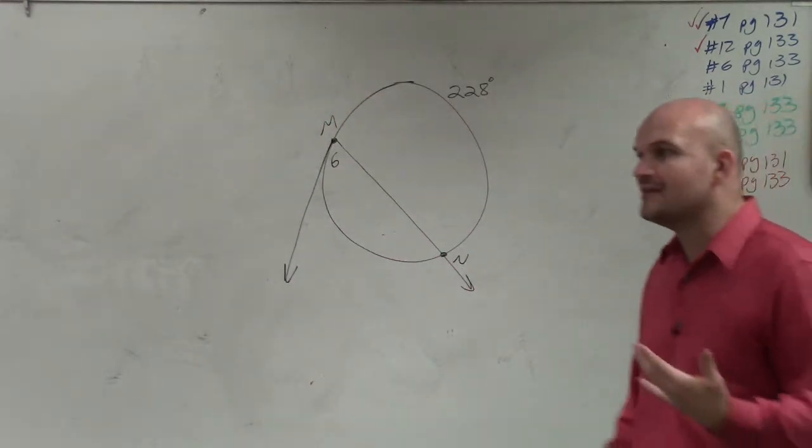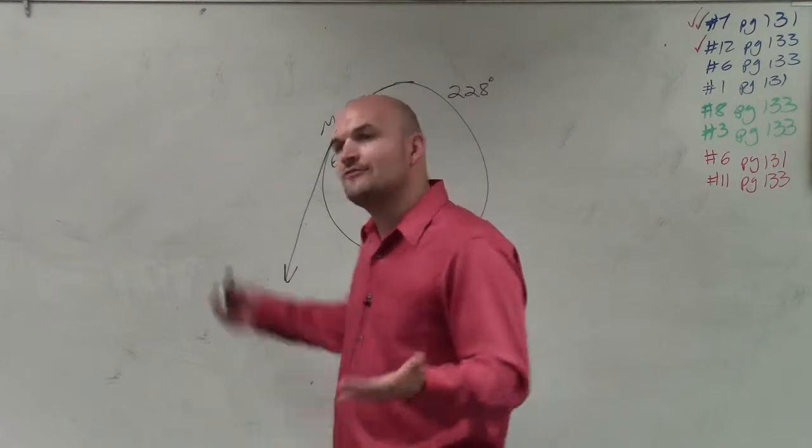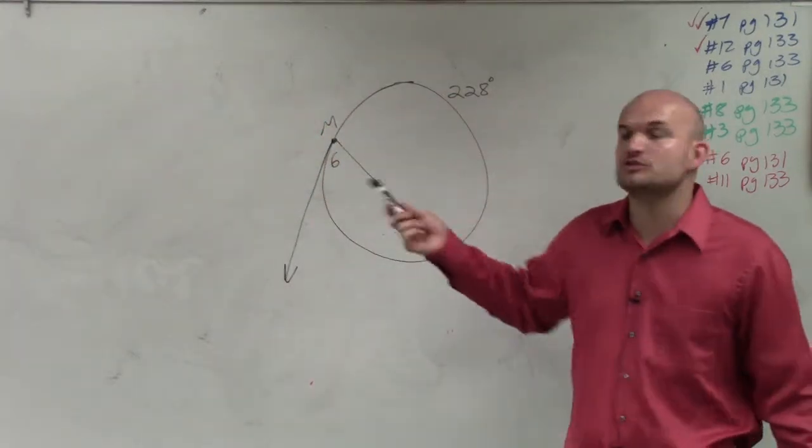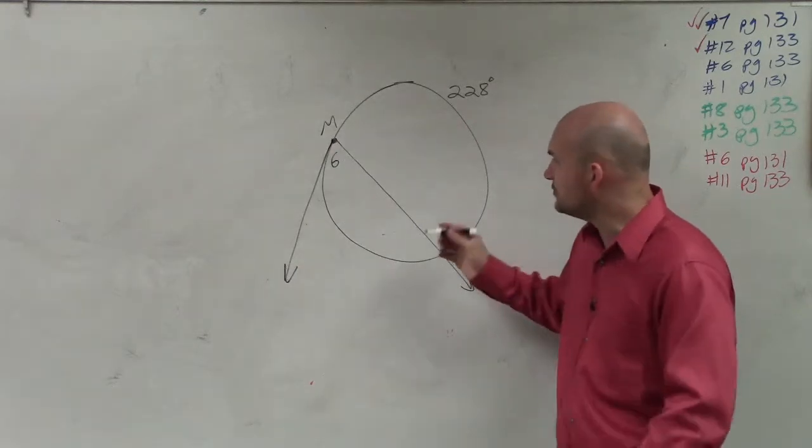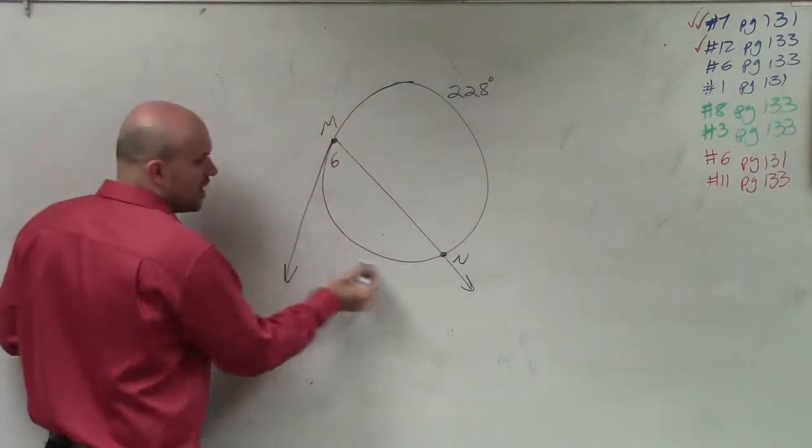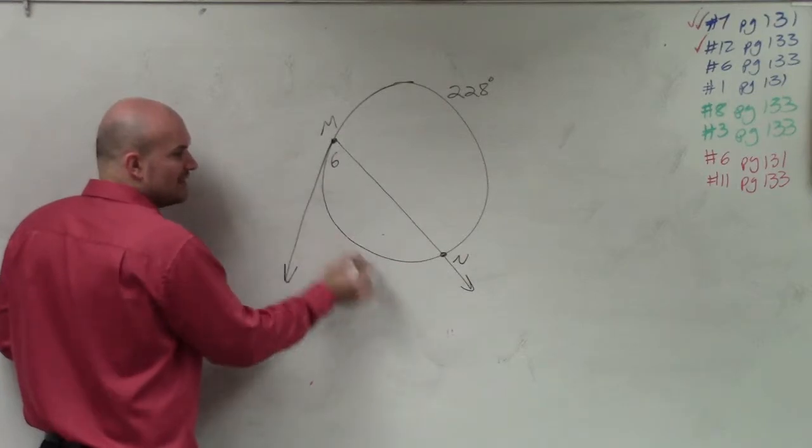Even though we don't have two chords, the formula for this is just like any other inscribed angle, where the measure of angle 6 is going to be 1 half of its arc. So we need to figure out what the arc is.